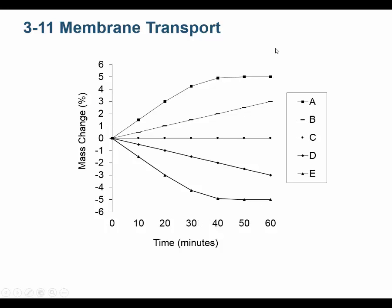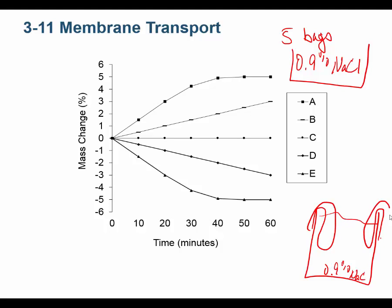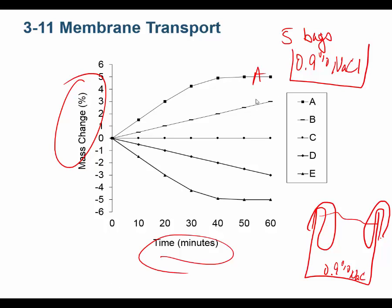Here are five bags that are semi-permeable, immersed in a 0.9% sodium chloride solution in a beaker. We're looking at how their mass changes over time. Sodium chloride cannot cross this membrane. Bag A and bag B gained weight — their mass went up. Bag C didn't gain any weight. Bag D and bag E lost weight. Why did bags A and B gain weight? Because water went in — bags A and B were hypertonic, and water always travels from a hypotonic environment into a hypertonic environment.